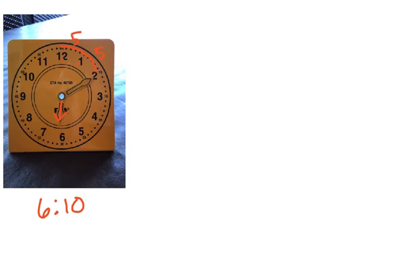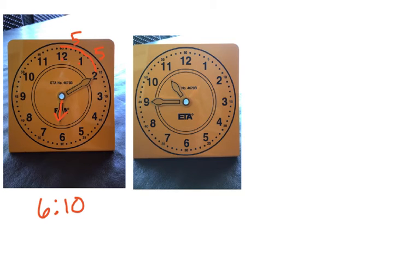Let's try another one. First thing we want to do is look at the hour hand, the shorter one. It's between 10 and 11, getting closer to 11 but not there yet, so it's 10 o'clock. We're going to count by 5s. Count with me out loud: 5, 10, 15, 20, 25, 30, 35, 40, 45. It would be 10:45.